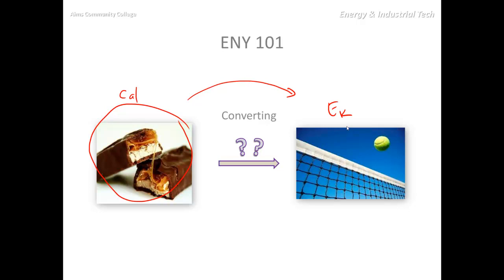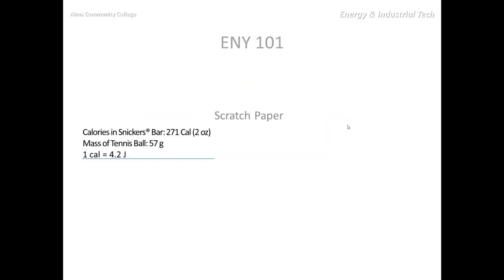So let's see, we've got some numbers, let's see what we can do with that. We find that there are 271 kilocalories, or food calories, in a two-ounce Snickers bar, and we find that a tennis ball weighs just about 57 grams. One regular calorie, not a kilocalorie, but a regular calorie, is equal to 4.2 joules.